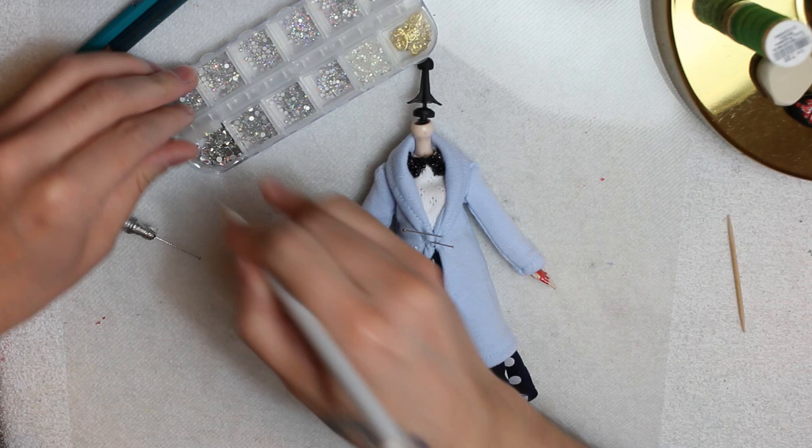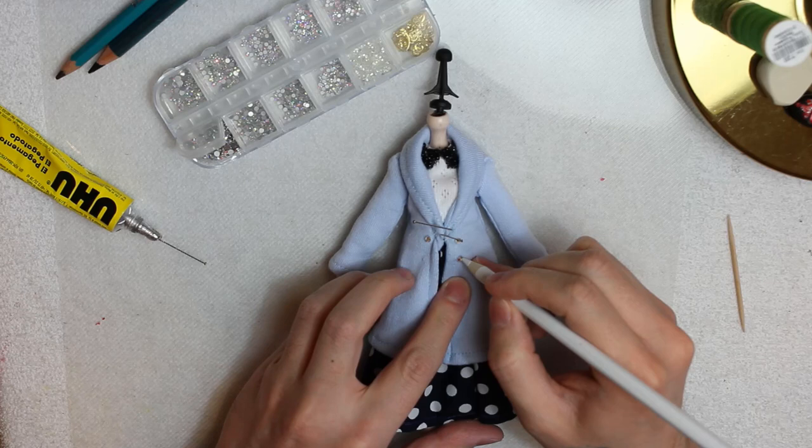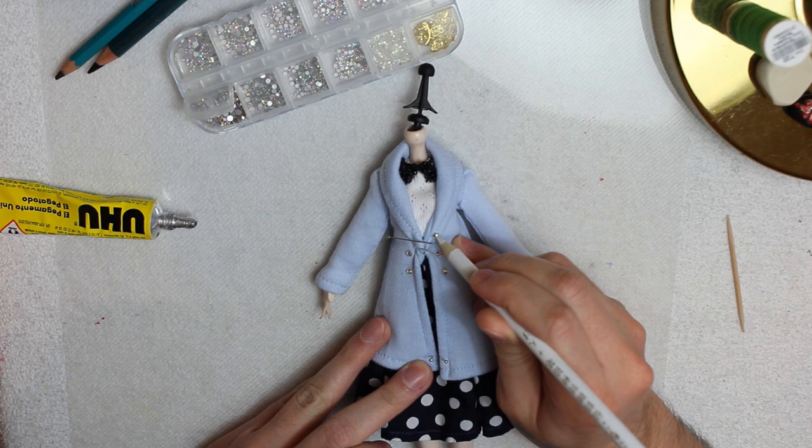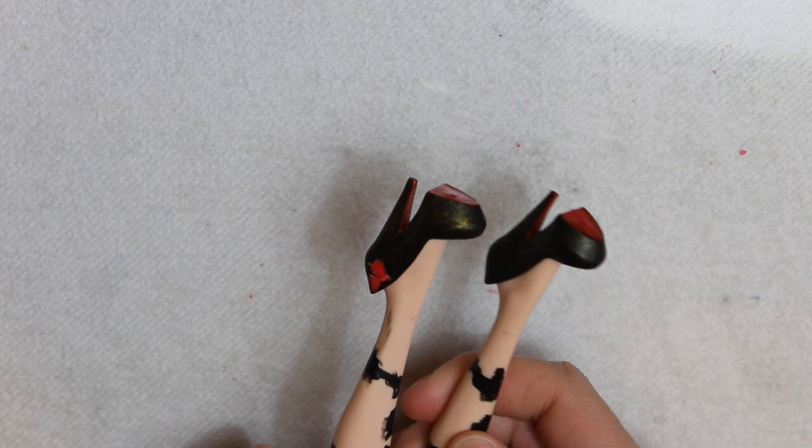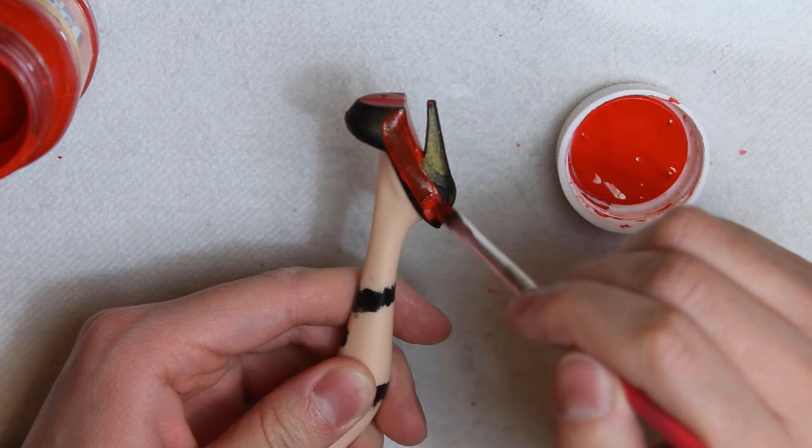For the decorations, I'll glue on some rhinestones as buttons. For the shoes, I grab these basic pumps that I once painted black and now paint them red.